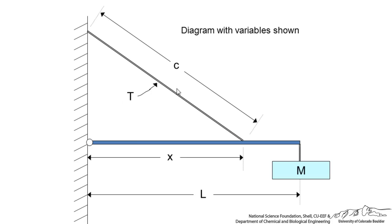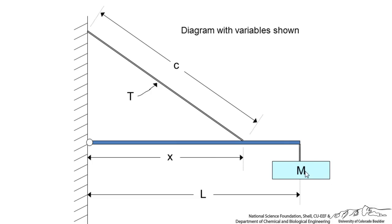T is the tension that is in that cable. If we have too big of a mass, as mass goes up, tension goes up and it might even snap. Attachment position of the cable is little x and then we have the mass of the sign which is big M. So let's try to solve this in Excel.